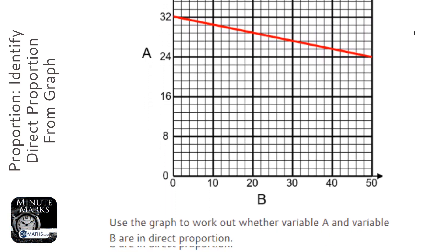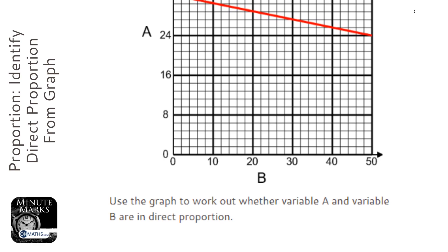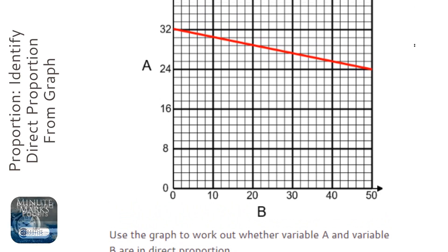Okay, so we're given a graph in this question, and it says use the graph to work out if A and B are in direct proportion.